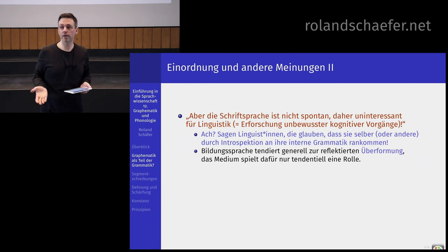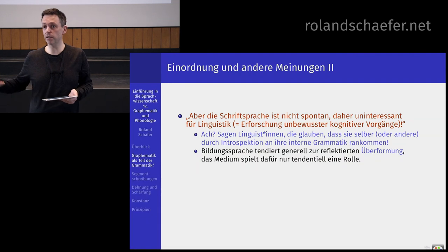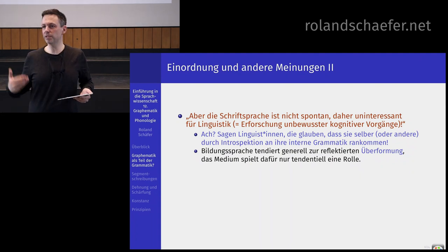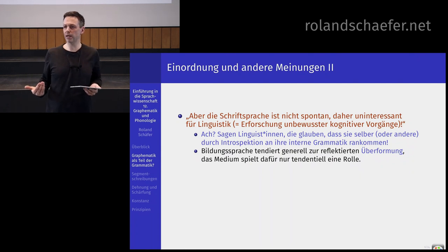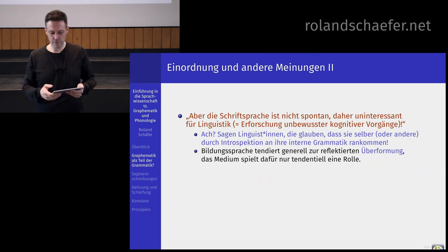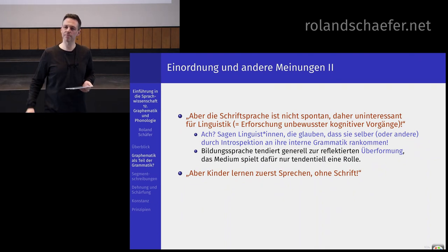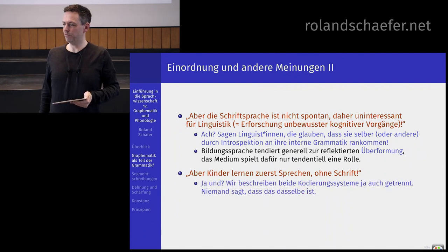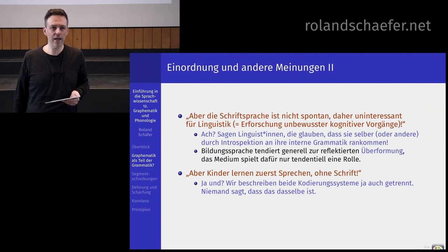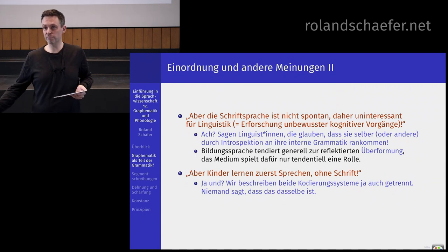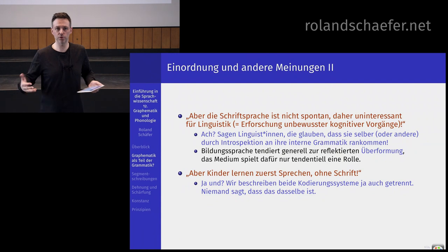Bildungssprache tendiert zur Überformung, also dazu, dass man darüber nachdenkt und das optimiert. Aber das Medium spielt dabei nur eine untergeordnete Rolle. Dann gibt es das Argument: Kinder lernen zuerst sprechen ohne Schrift, also muss Sprechen wichtiger sein als Schrift. Da sage ich: wir beschreiben beide Codierungssysteme als voneinander getrennt. Das eine wird früher gelernt als das andere. Deswegen gibt es Spracherwerbsforschung für den frühen Spracherwerb und Schriftspracherwerbsforschung – das muss nicht dasselbe sein, um gleich wichtig zu sein.